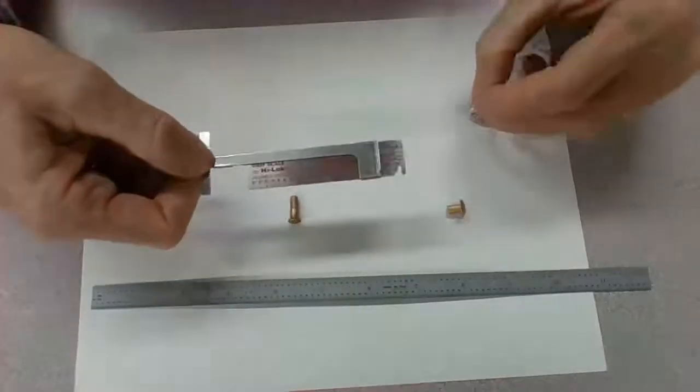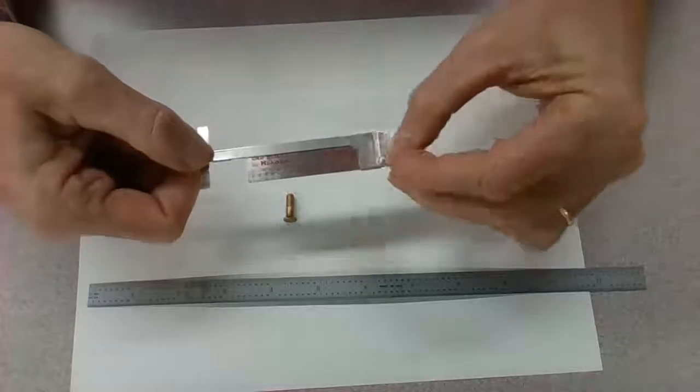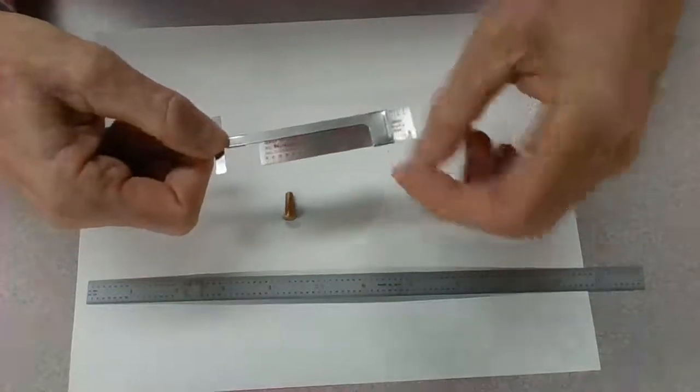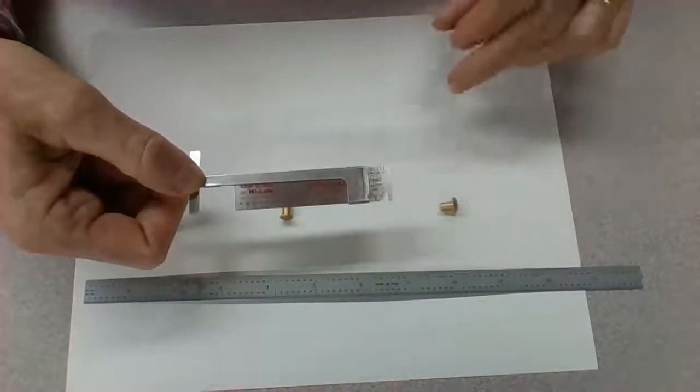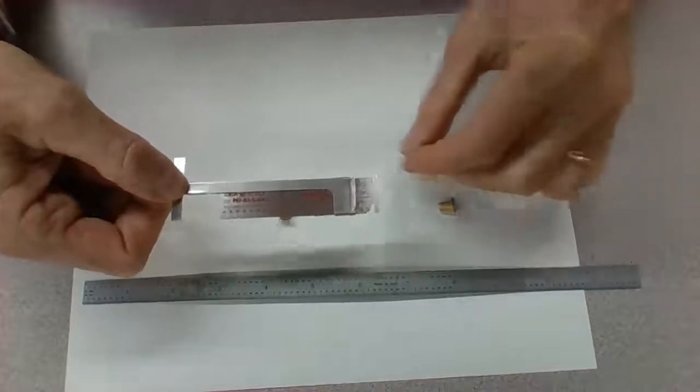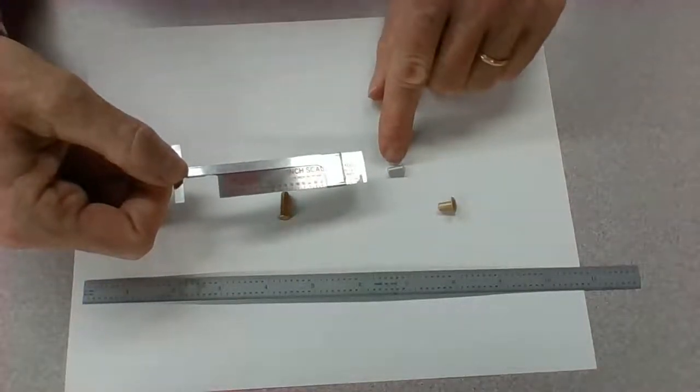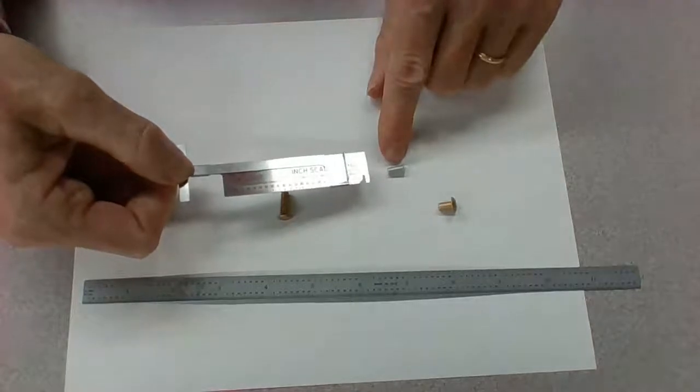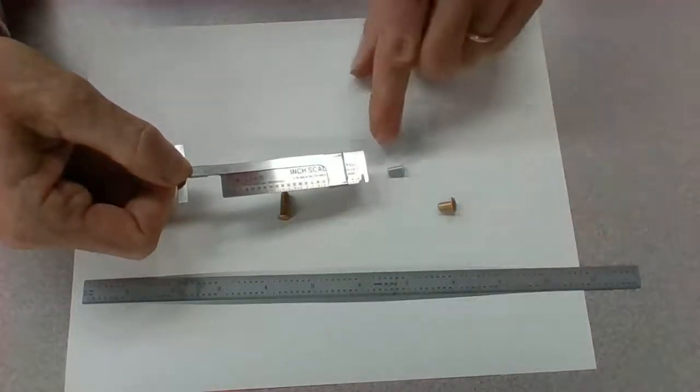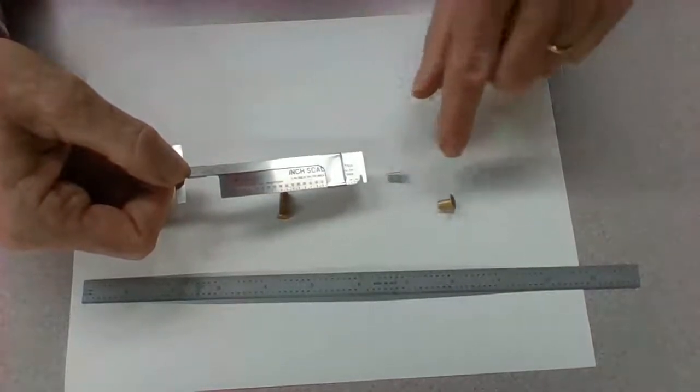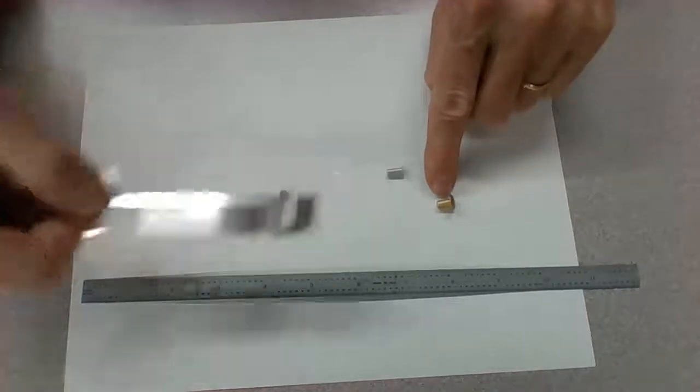Now, when I take that away, this particular rivet stops right at the 6. So, this particular rivet is 6 16ths of an inch. So, we have a 6 16ths. We have a 5 16ths.